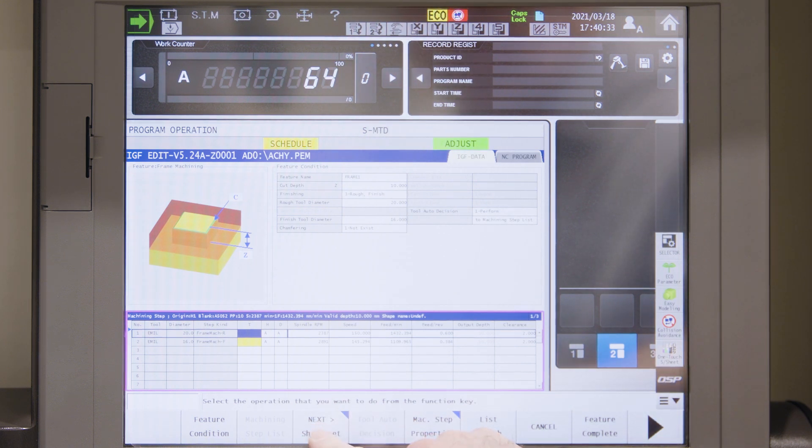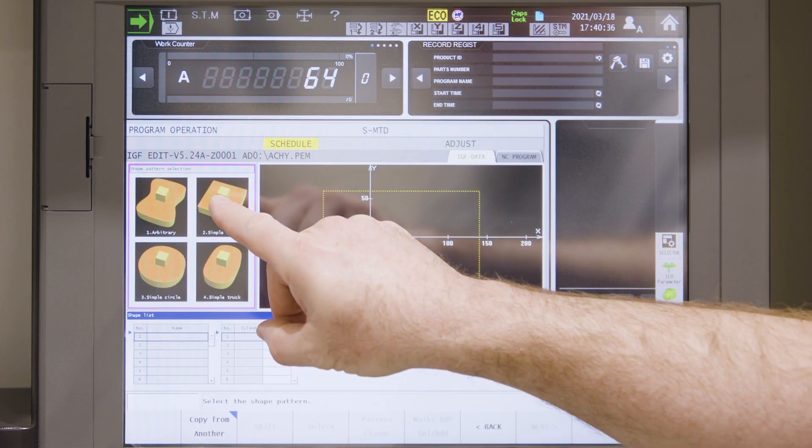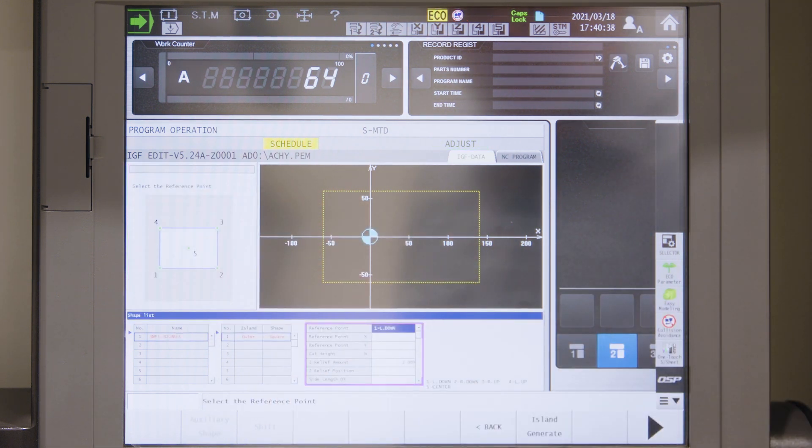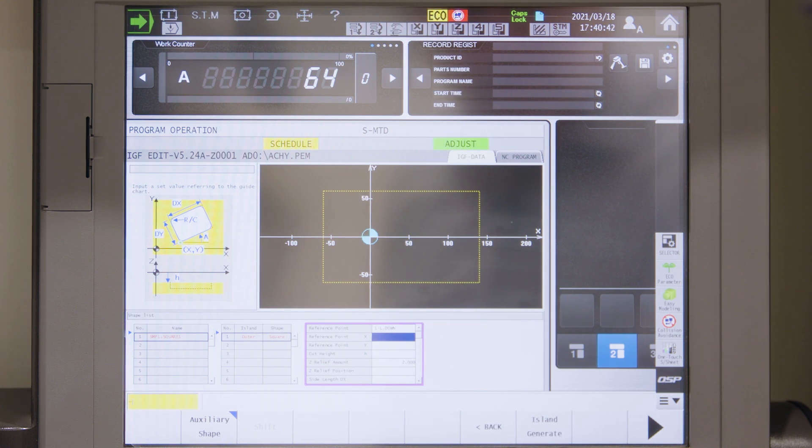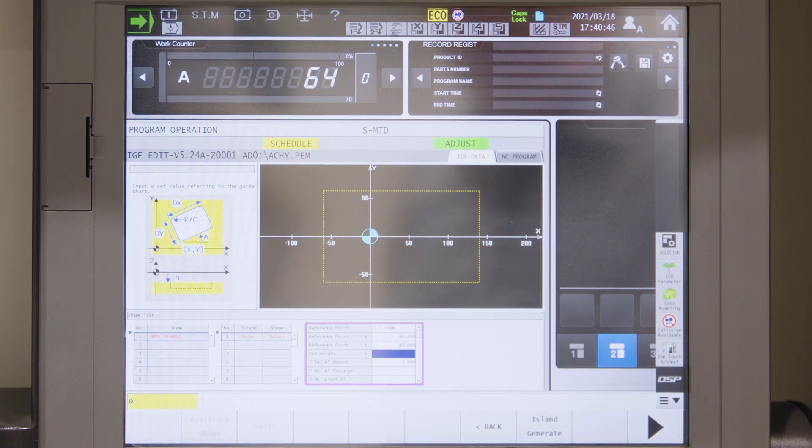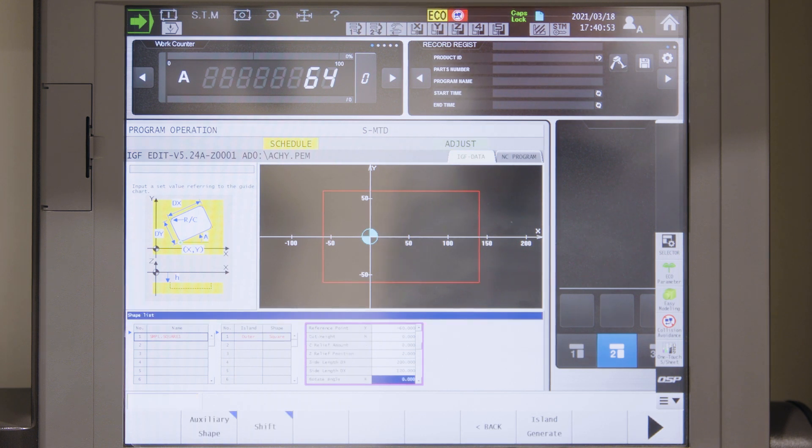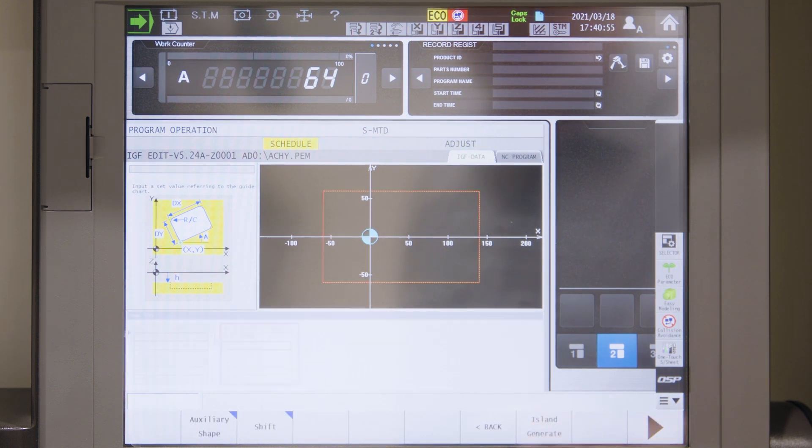Then in the next step I will fix the shape. First one is for the external shape. It's a simple square where I can set the corner on the left edge which is minus 60 minus 60 again. The cutting height is at zero. Relief amount 2 millimeter. X length is 200 millimeter. Y length is 120 millimeter. And now I can generate the island.